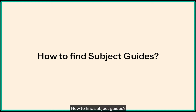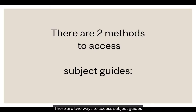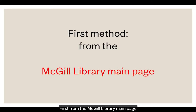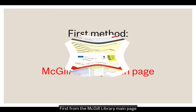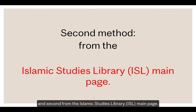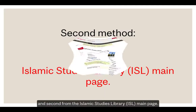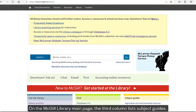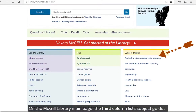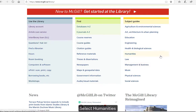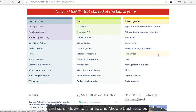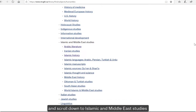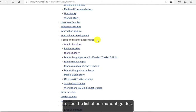There are two ways to access subject guides. First, from the McGill Library main page. On the McGill Library main page, the third column lists subject guides. Select Humanities, and scroll down to Islamic and Middle East Studies to see the list of permanent guides.